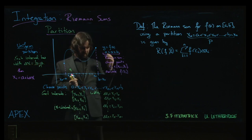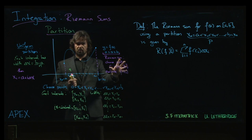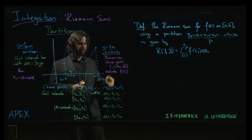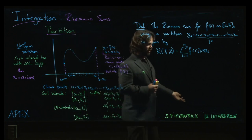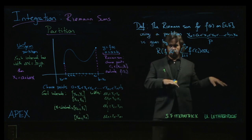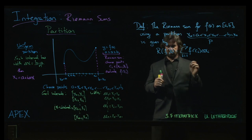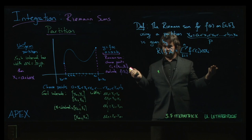And the ci's, there's no real rule on how you choose them. So usually for ease of calculation, like we've seen in some of the examples, we choose left endpoint or right endpoint. If we want to be a little more accurate in our approximation, we can choose the midpoint. But in principle, you can choose it however you want.